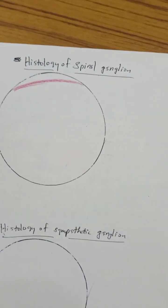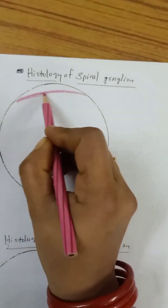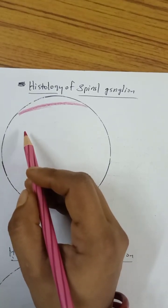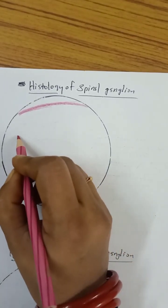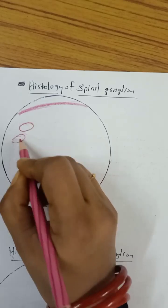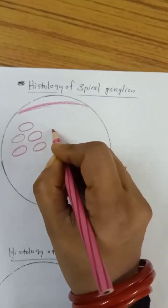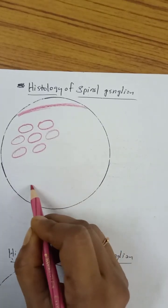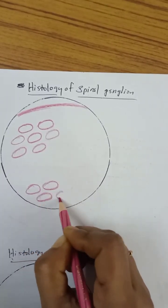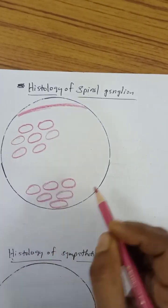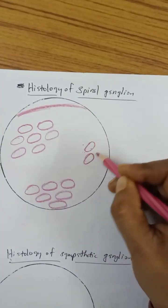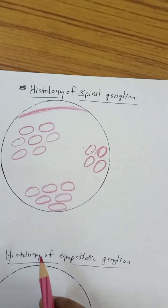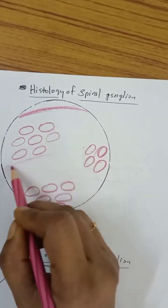Histology of the spinal ganglion: there is a capsule, and the pseudo-unipolar ganglionic cells are arranged in a group. You can see groups of ganglionic cells — one, two, three groups total — and nerve fibers are also present here.